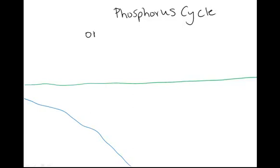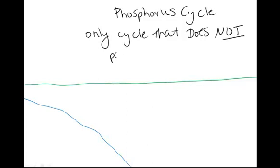And phosphorus is the only cycle that does not have a time where it passes through the atmosphere in gas form. Phosphorus never exists as a gas on our planet. Only cycle that does not pass through the atmosphere. So it's going to stay on the land. It's going to stay in the water. It'll be in the living things, but it doesn't exist in gas form.